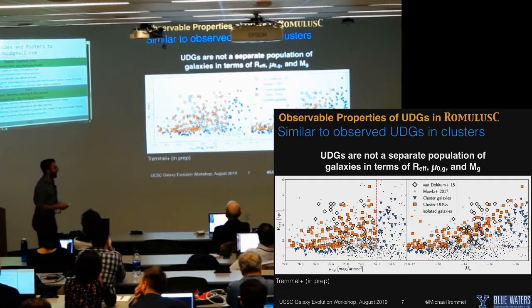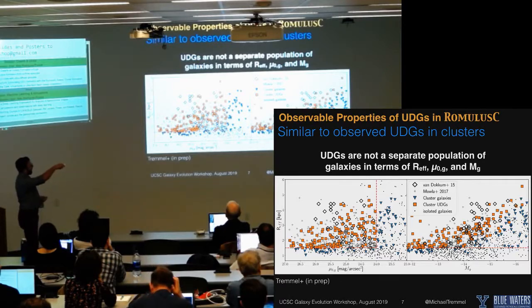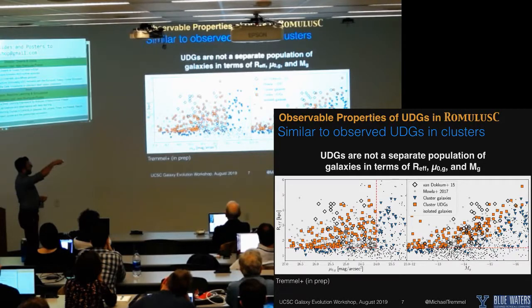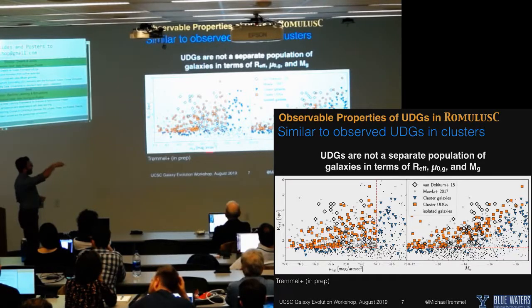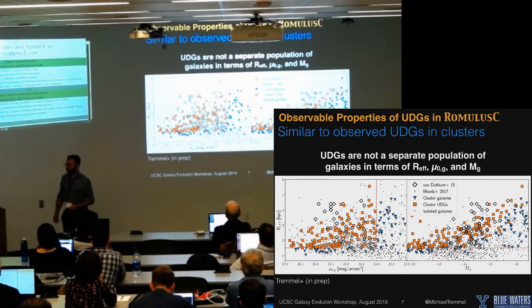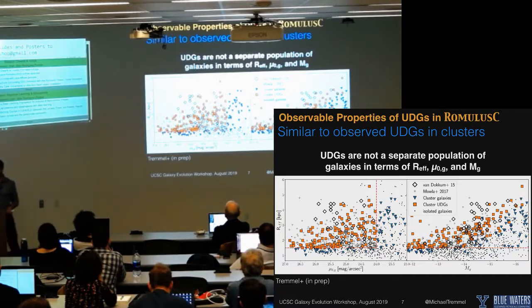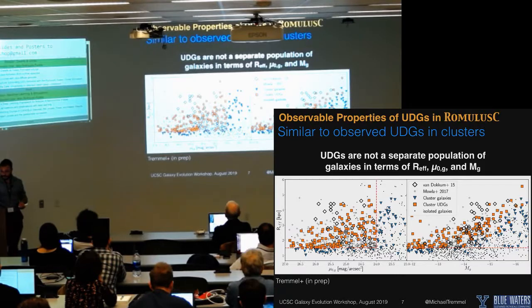Looking at effective radius as a function of central surface brightness and total G-band magnitude, the cluster is able to populate a lower surface brightness region that is only rarely populated by isolated dwarf galaxies. Importantly, we also show the observed population of UDGs in the Coma cluster, and we match very well the overall region in parameter space that UDGs are observed.